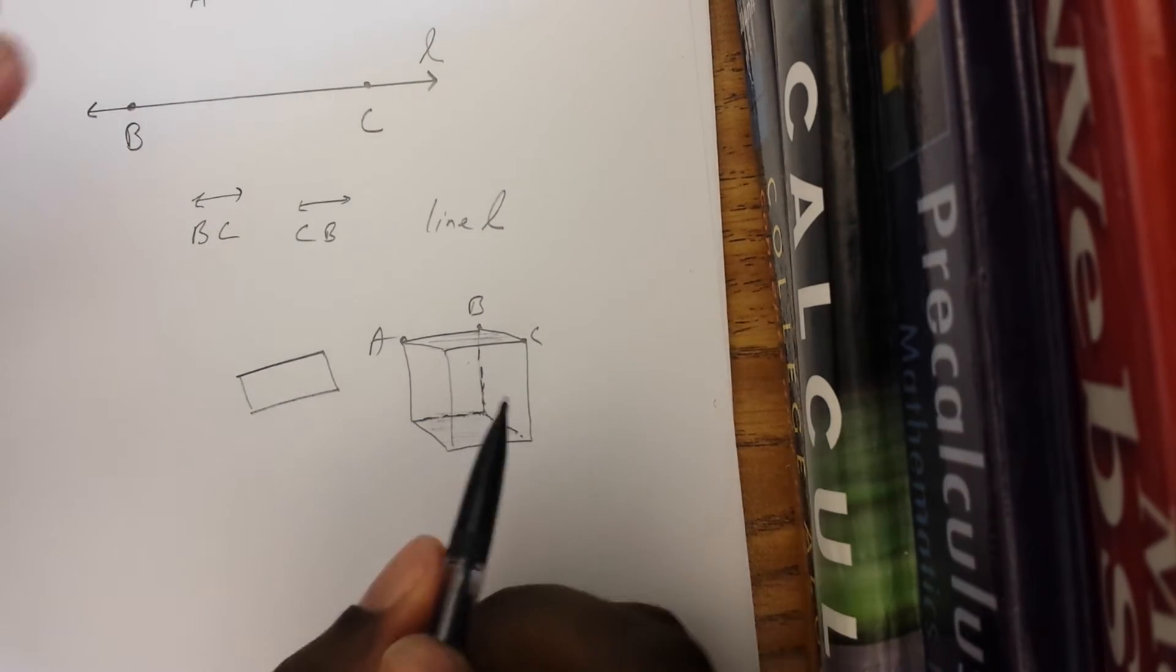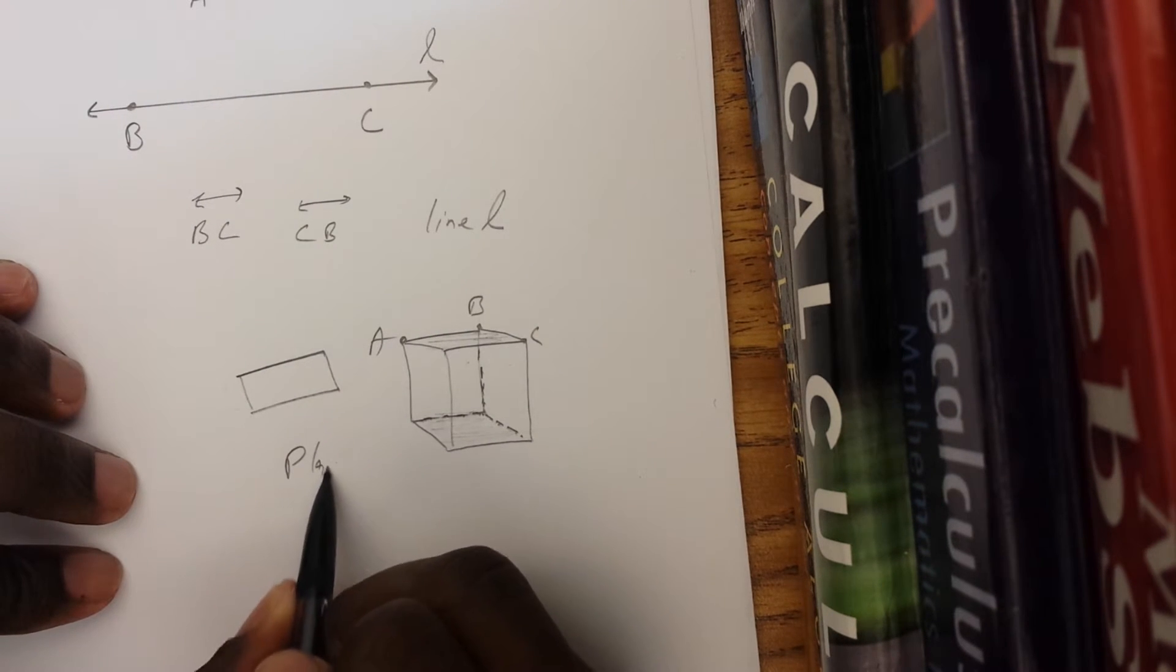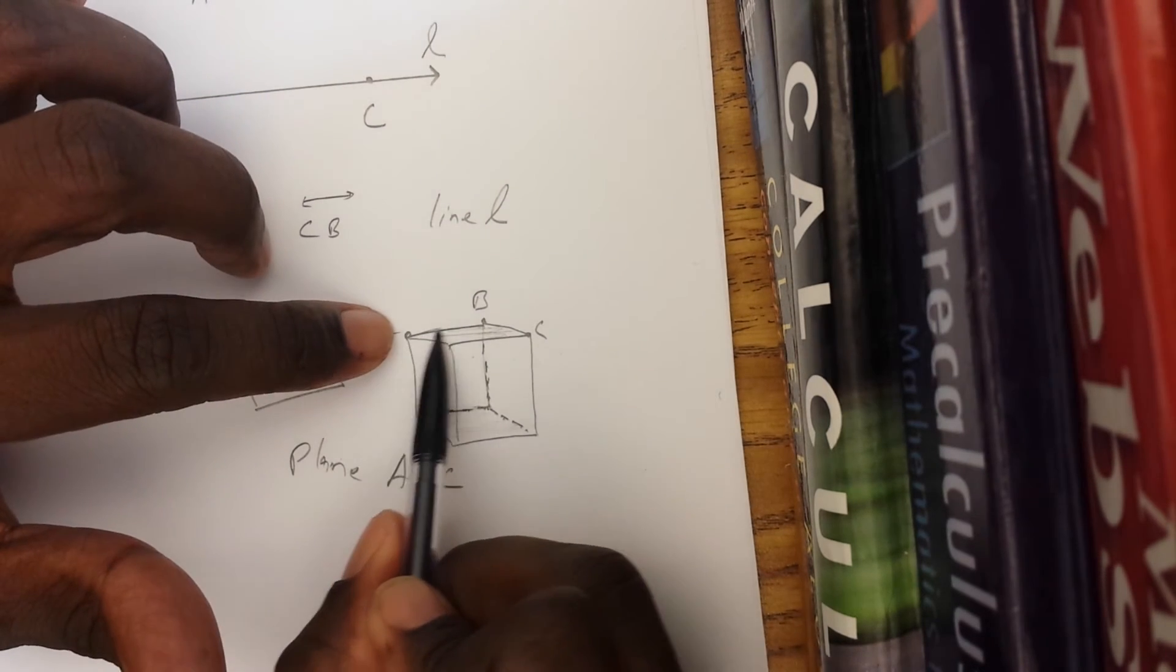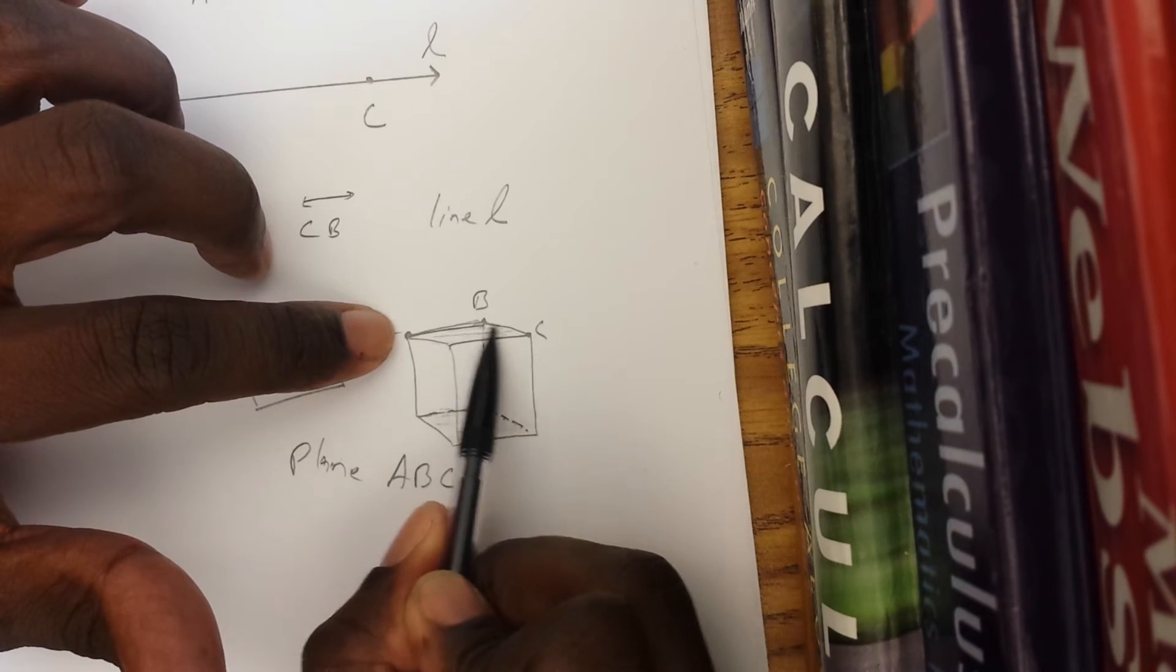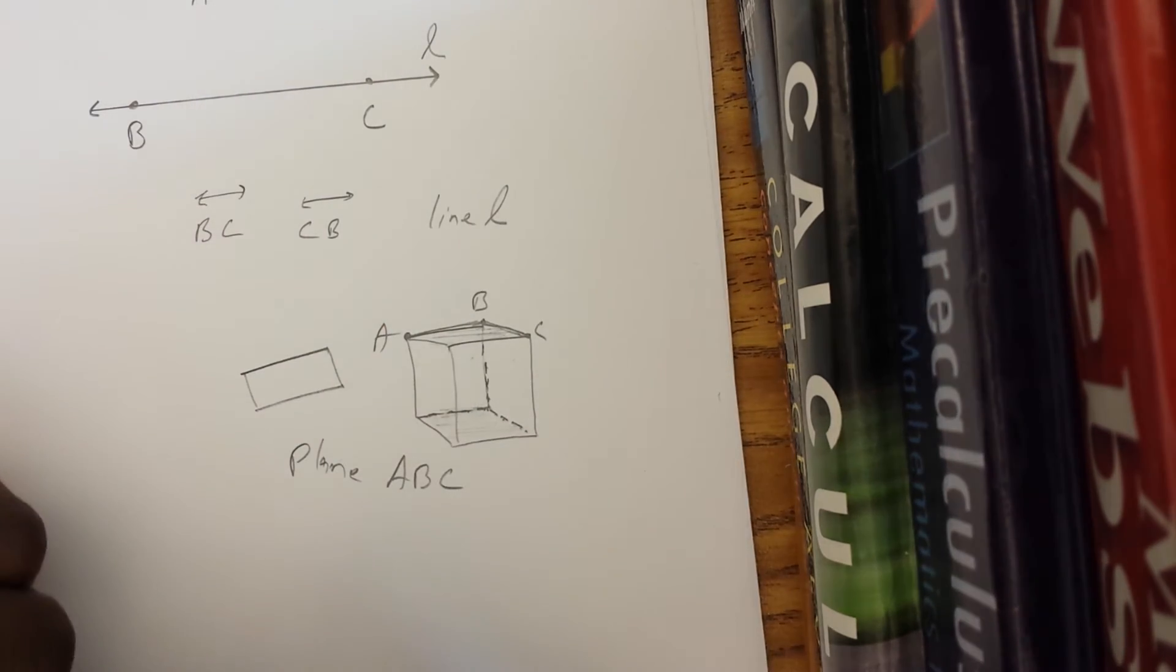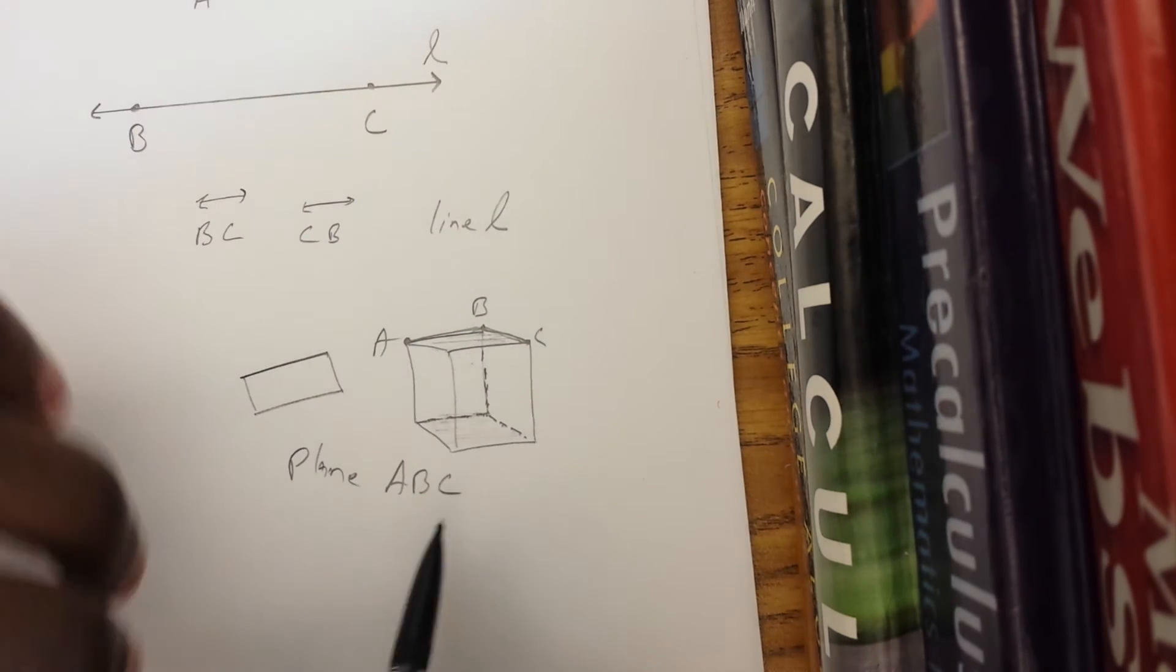So you need three non-collinear points to name a plane. So you can call this plane A, B, C. By making them non-collinear, I know that all three of them are not on the same line. Two of them will always be, but the third one has to be off that line. So I know I'm referring to this plane and not some other plane.